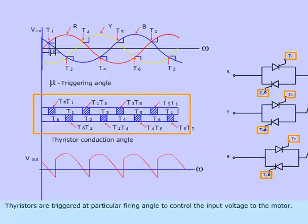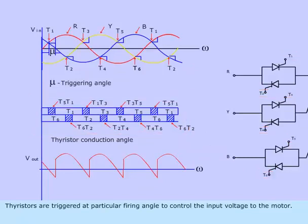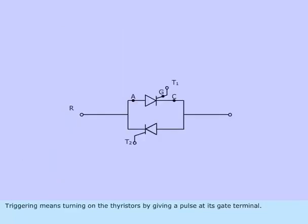Thyristors are triggered at particular firing angle to control the input voltage to the motor. Triggering means turning on the thyristors by giving a pulse at its gate terminal.